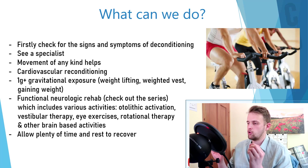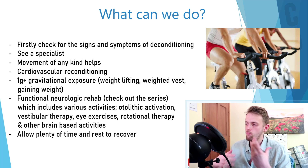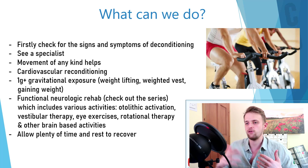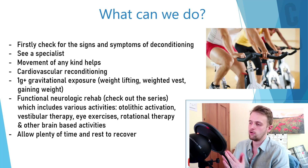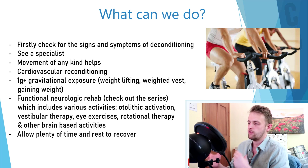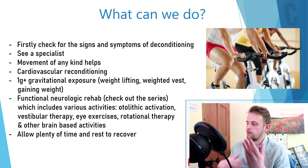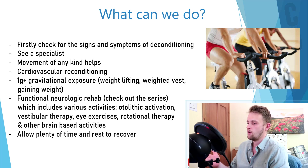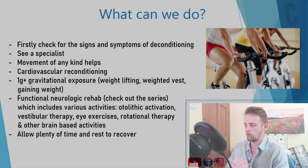What can we do? First, check for the signs and symptoms of deconditioning and see a specialist who might point you toward physiotherapy and ways to gradually recondition your body and nervous system. Movement of any kind will help, as will cardiovascular reconditioning — though it has to be very gradual. 1G-plus gravitational exposure, weight lifting, weighted vests, and gaining weight will all gradually recondition the cardiovascular system. Functional neurologic rehab is also advised, including otolithic activation, vestibular therapy, eye exercises, rotational therapy, and other brain-based activities. Finally, allow plenty of time and rest for recovery.